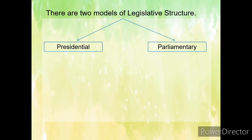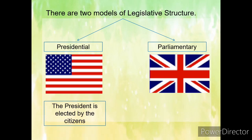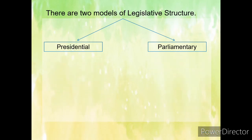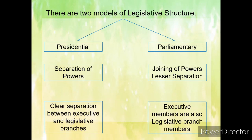There are two models of legislative structure — the presidential model as in the US and the parliamentary model as in the UK. In the US, the president is elected by the citizens, whereas in the UK as well as in India, the prime minister is selected by the majority party in parliament. There is a clear separation between the legislative and executive branches in the presidential model, whereas the parliamentary model has lesser separation of powers as executive members are also legislative branch members.